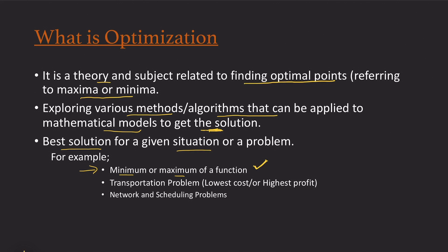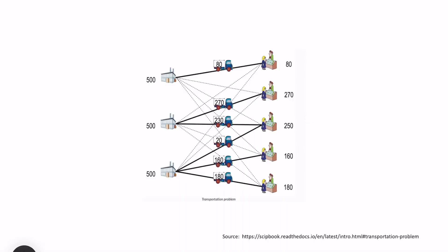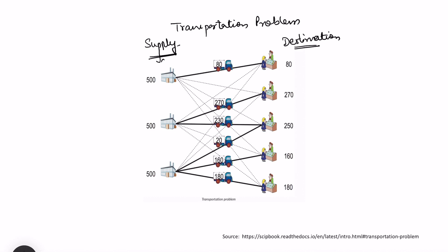We can also look at the best solution in a real life situation, such as a transportation problem where I want to minimize total transportation cost. Consider this transportation model shown as a network — we want to supply something from warehouses to destinations. We can see the supply available at each warehouse and the requirement at each destination, with a per unit cost associated with each transportation route.